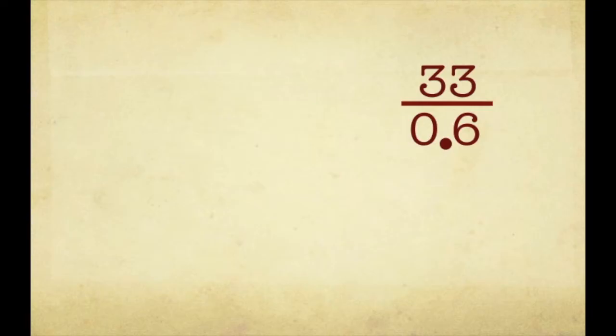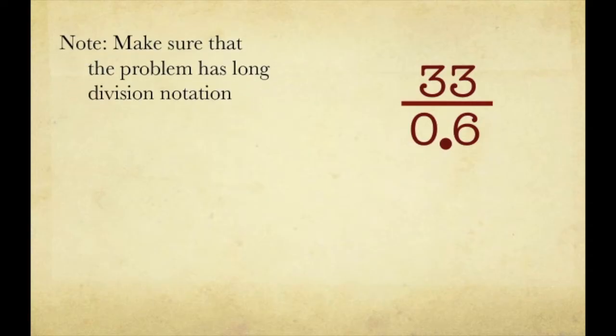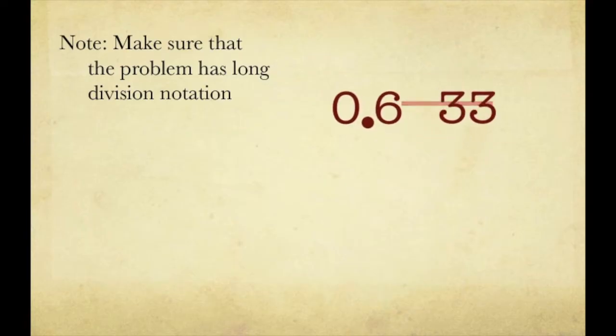How about here? We have 33 divided by 0.6. The same four steps apply no matter what the notation looks like. Here it's represented as a fraction rather than house notation. All we have to do is put it into the house notation — the long division notation. So now we have 33 inside the house and 0.6 outside.